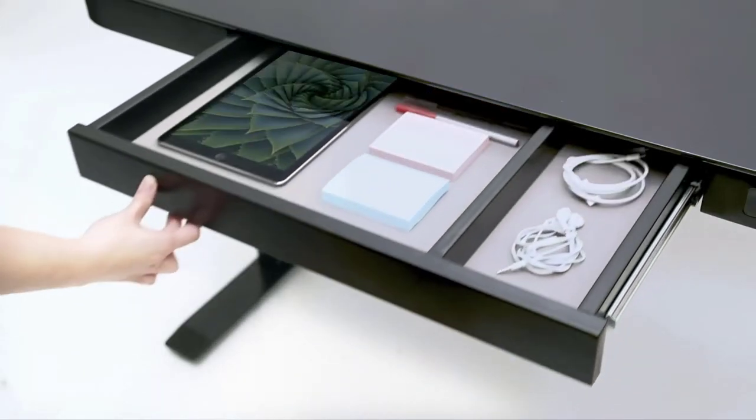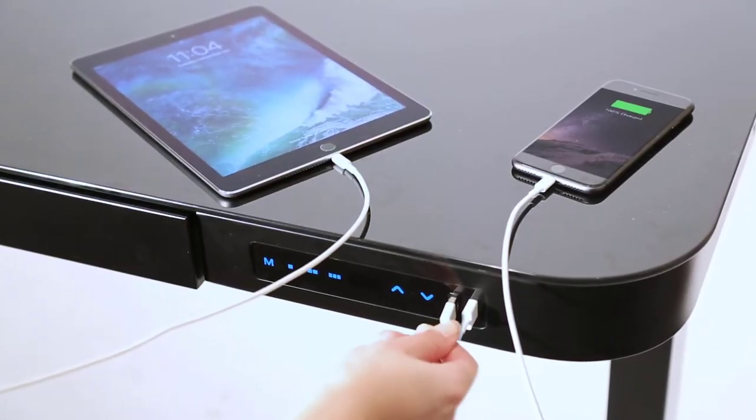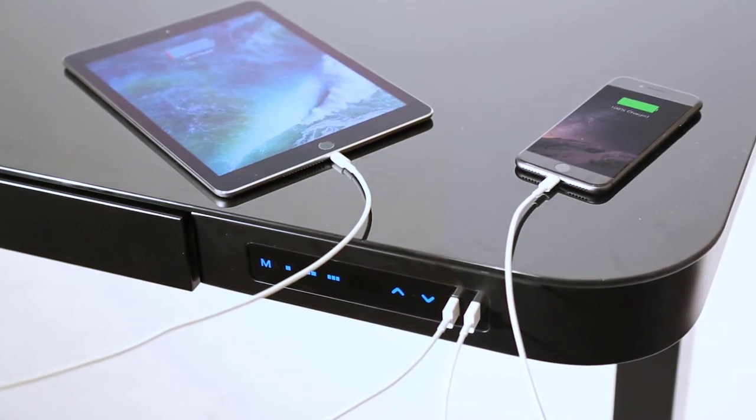Organize your things in the pull-out storage drawer with a non-slip liner. Quickly charge two high-powered devices like the iPad or iPhone with powered dual USB ports.